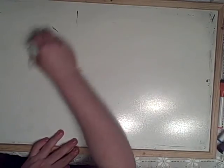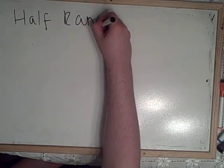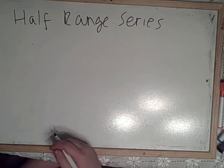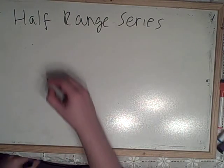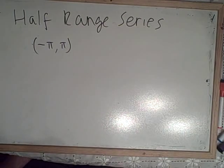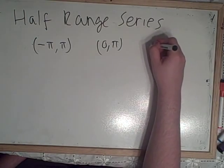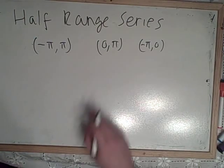Now, the next thing is half range series. You can be asked for either half range cosine or half range sine. The only times you'll use this is—well, normally we have it between minus pi and pi, don't we? But with a half range, we've only got half a thing. So it would be between 0 and pi, or minus pi and 0.